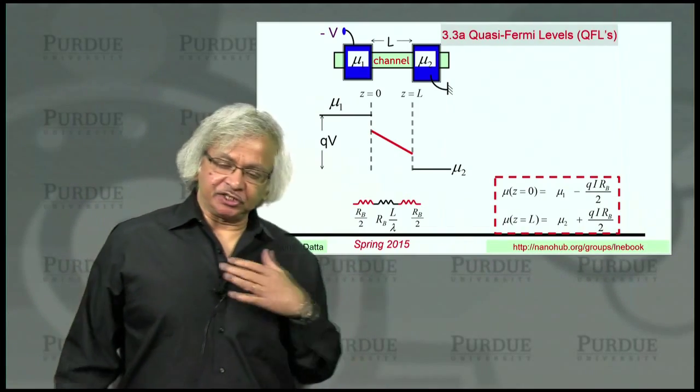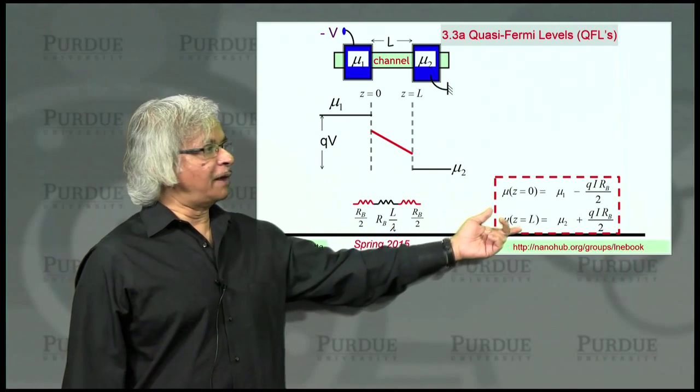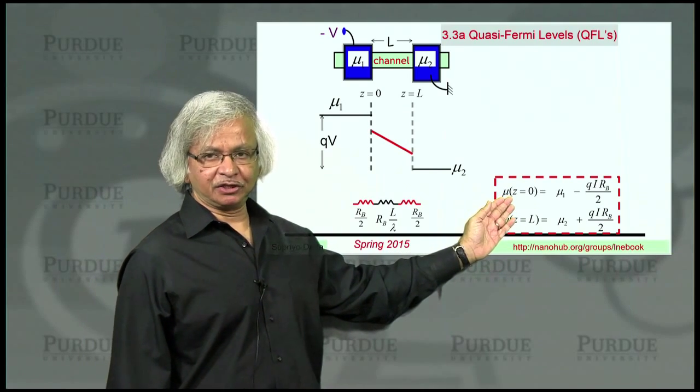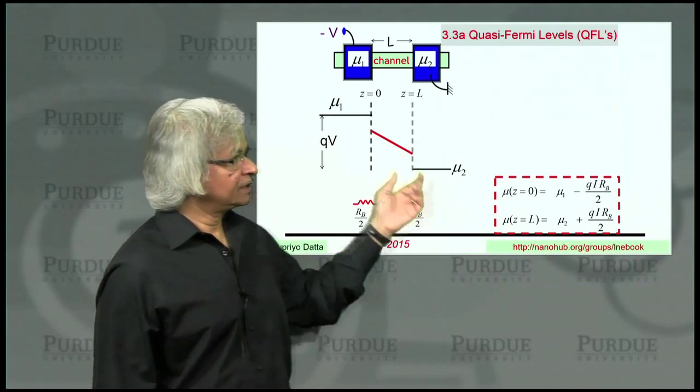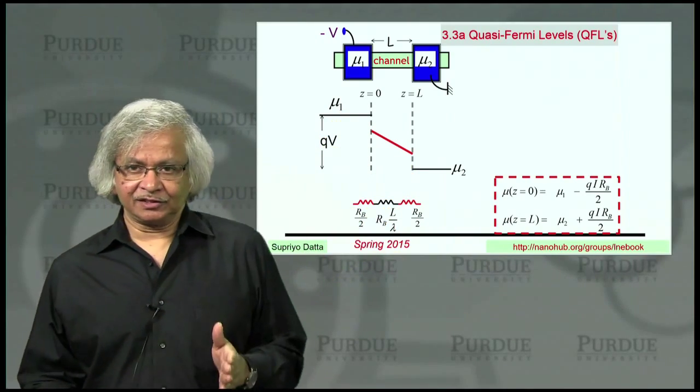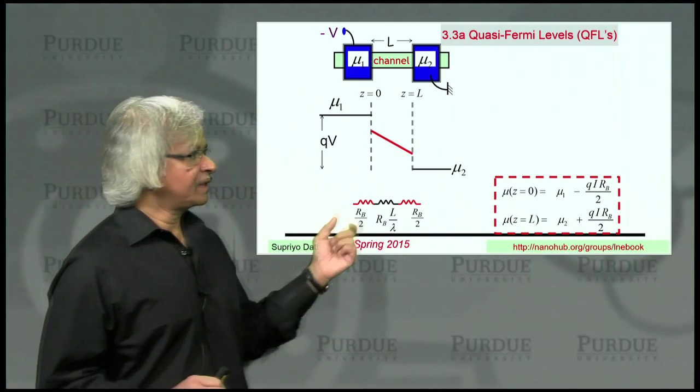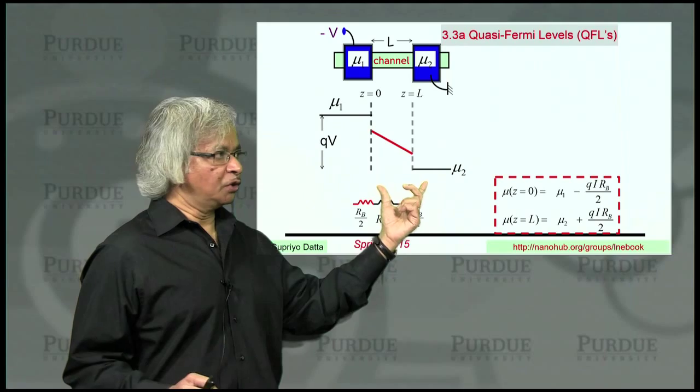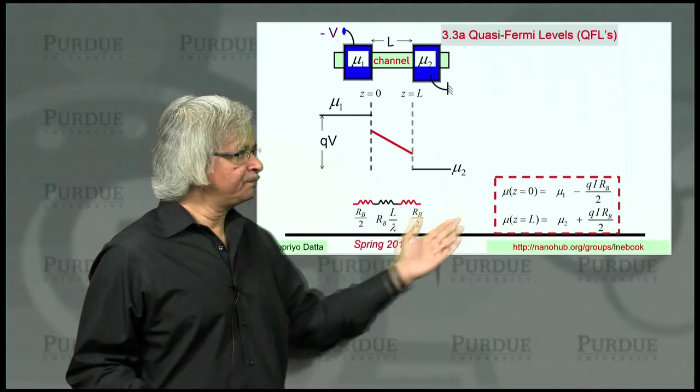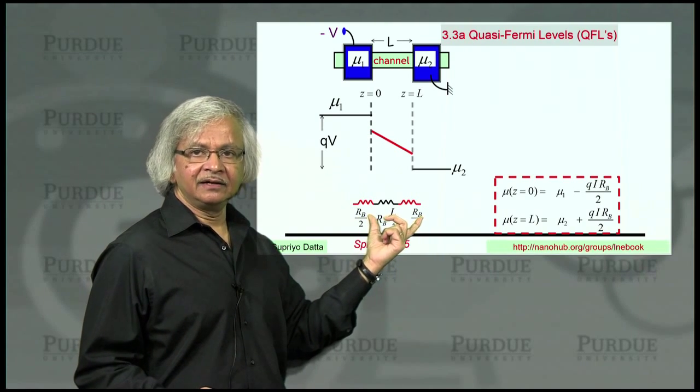In the last lecture we introduced a new boundary condition for the electrochemical potential that we could use to solve the diffusion equation and get correct answers that actually include the ballistic resistance. We showed that this new boundary condition amounts to having extra resistances at the interface.